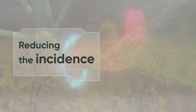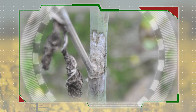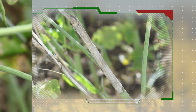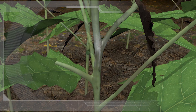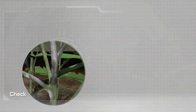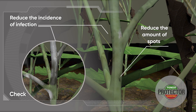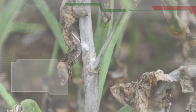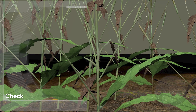This is done by two different modes of action. First, by reducing the incidence: oilseed rape plants infected by Sclerotinia sclerotiorum will show easily visible spots on their stems. Sclerotinia Protector tolerance traits will reduce the incidence of infection and thus reduce the number of spots present on the stems. Second, by reducing the severity: Sclerotinia Protector tolerance traits will also reduce the intensity of sclerotinia lesions.